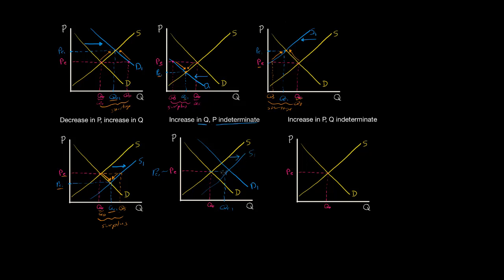We're now at a situation in which the increase in quantity is clear — quantity increases to QE1 — but the change in the price is indeterminate. If both demand and supply increase, then there will definitely be an increase in the equilibrium quantity, but the change in price is unclear. It depends on how much we increase demand or supply. If demand had increased by more than supply — say out to D2 — then we would clearly have an increase in both the equilibrium price and the equilibrium quantity. But if the magnitude of the demand and supply increases are roughly similar, then it's clear that quantity increases, but it's not so clear how the price is affected.